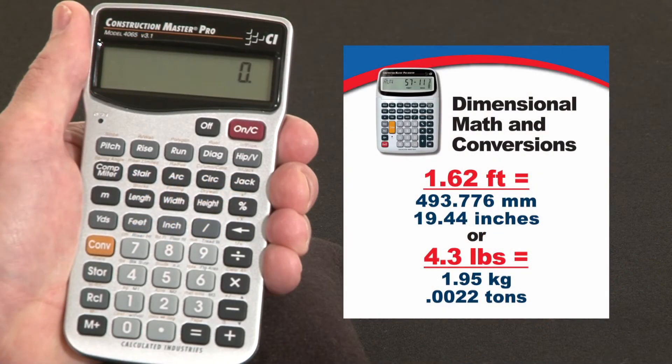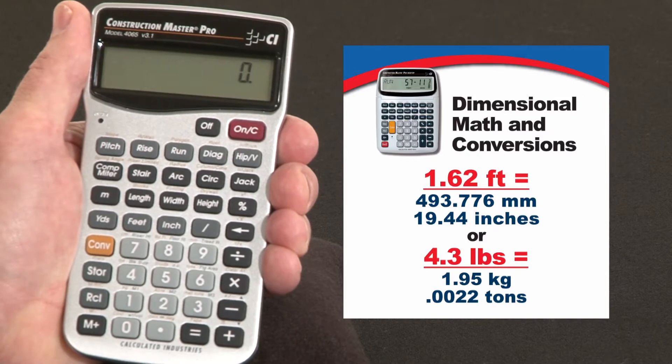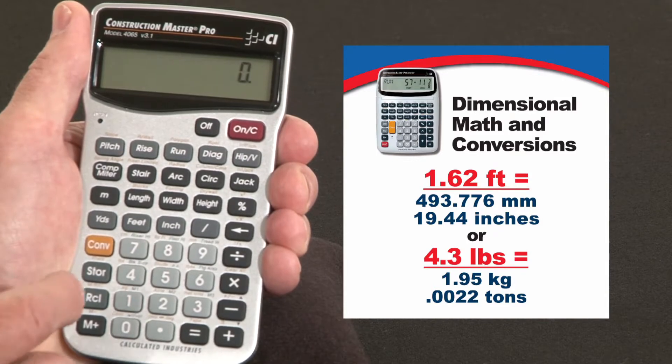Now let me show you how to do dimensional math and conversions on your Construction Master Pro. And keep in mind, the keystrokes are exactly the same if you're using our Trig model or our desktop models. Both give you fast, accurate solutions for all your dimensional math and conversion needs.